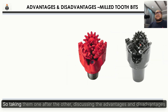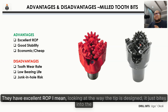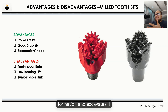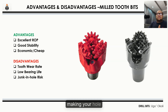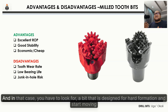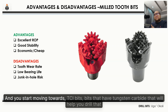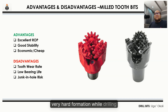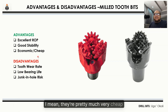Discussing advantages and disadvantages: the mill tooth bit — for very soft formations it has excellent ROP. Look at how the tip is designed to just bite into the formation and excavate it. Once the formation is soft enough, you keep making hole. Restrictions begin when the formation gets harder — then you look for a bit designed for hard formations, moving towards TCI bits with tungsten carbide. While drilling they have very good stability and are economical.